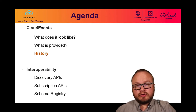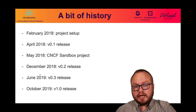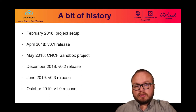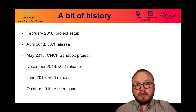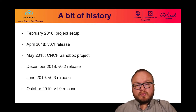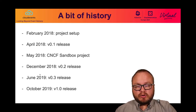A little bit of history. The project started in February 2018, and the first version v0.1 was released in April. In May, we got accepted as a CNCF sandbox project. In December, v0.2 was released, followed in 2019 by v0.3 in June, and finally the 1.0 in October 2019. Since then, we have worked on the interoperability specifications, including discovery, subscription, and schema registry.